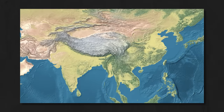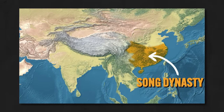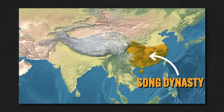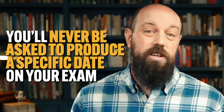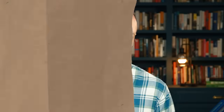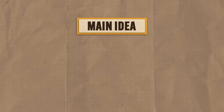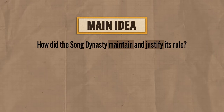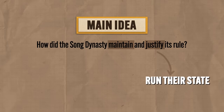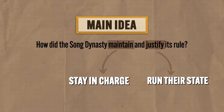During this period, the folks in charge called themselves the Song Dynasty, and they were in power from 960 to 1279. You're never going to be asked to produce a specific date on your exam — I mention it just so you know where we are in the timeline. The main question we need to answer is: how did the Song Dynasty maintain and justify its rule? In other words, how did the Song Dynasty run their state and stay in charge? I'm going to give you two main methods they used.